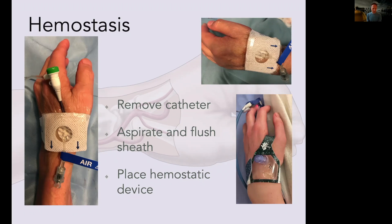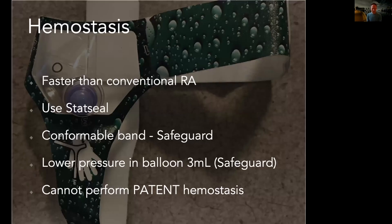We have a lot of data on this protocol and patients do really well. For hemostatic devices, I use two options: the Safeguard Radial — it's sticky and conformable, which is important given the unusual shape of the snuff box area. Bands for conventional access need modification, but this one stays in position with a small 7 mL balloon. The other option is the Prelude Sync, which is specifically made for distal access. Hemostasis is faster than conventional radial access. You cannot perform patent hemostasis, however, because you're puncturing distal to the superficial palmar branch.